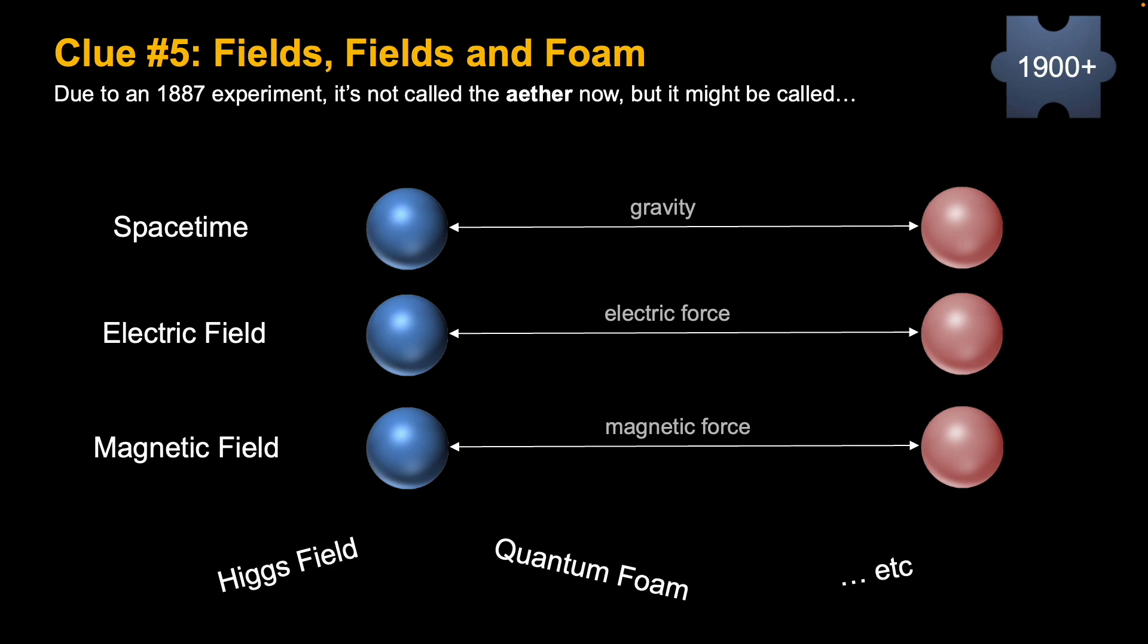So 1900s till now, instead of calling it the ether, there's other names for it instead. In the turn of the century, in the 19th century, Einstein's work on gravity, he called it space-time and the warping of space-time to be able to account for gravity.